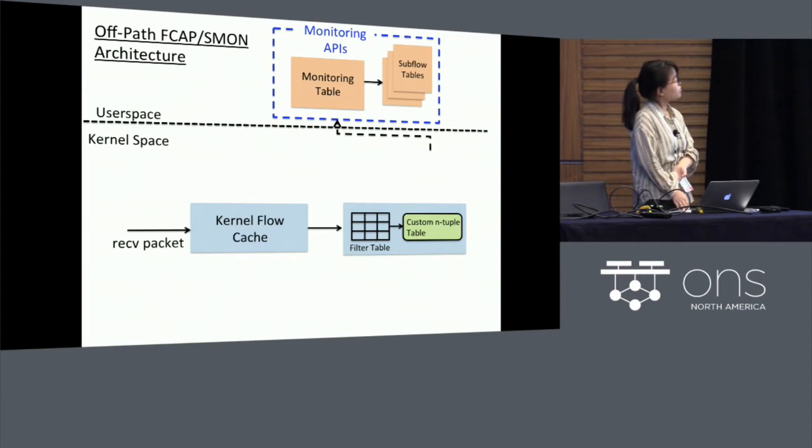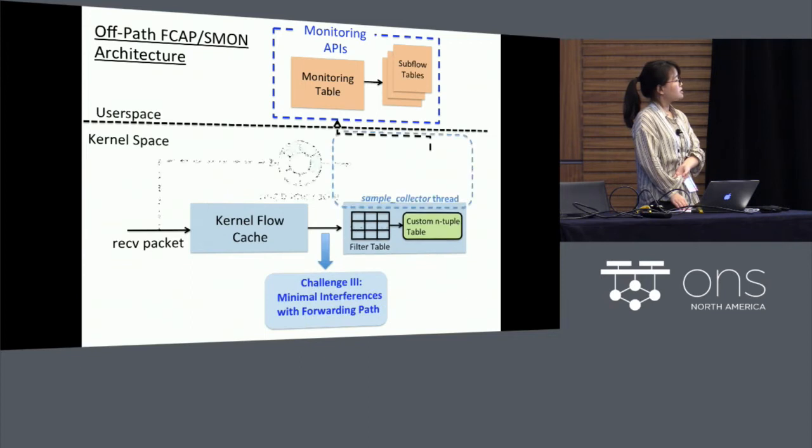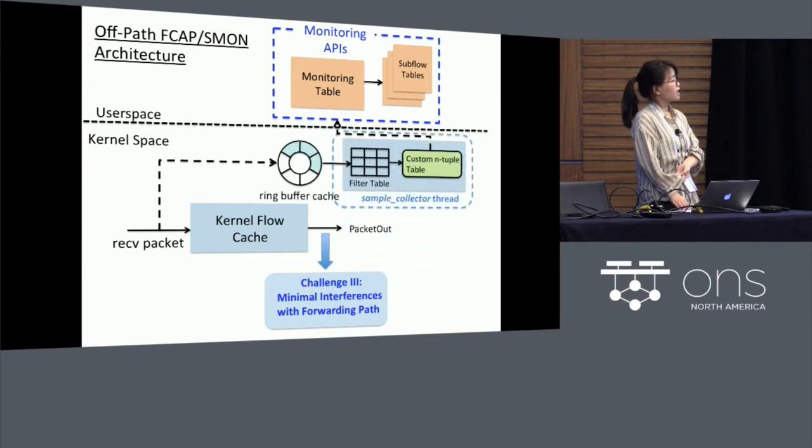Here for the off-path designs, the filtering table and the custom end table table are designed in similar ways as the on-path counterparts. And we create a custom thread in the kernel that is in charge of the flow stats collection in the custom table.